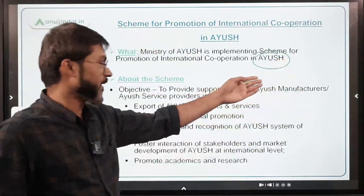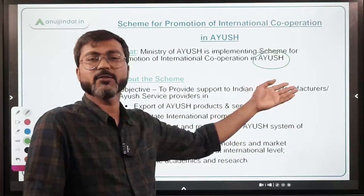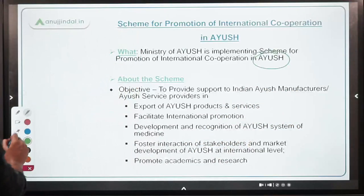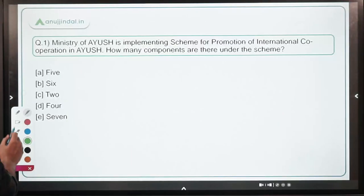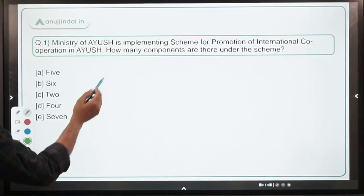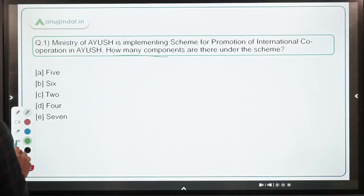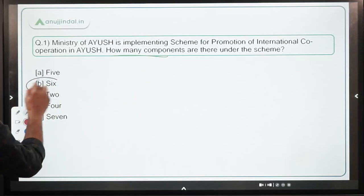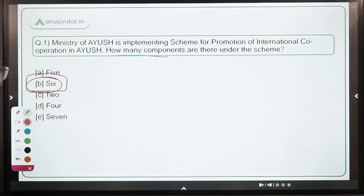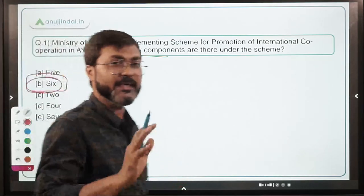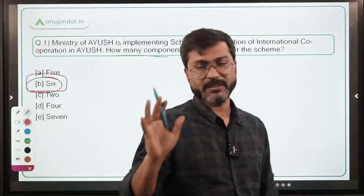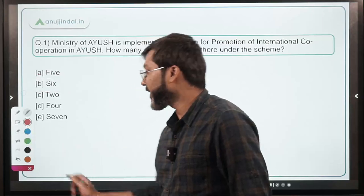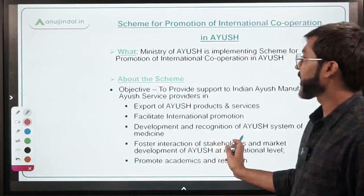The ministry is of course the Ministry of AYUSH. So coming back to the question — how many components are there? There are six components under this particular scheme. So option B is the correct answer to this question.